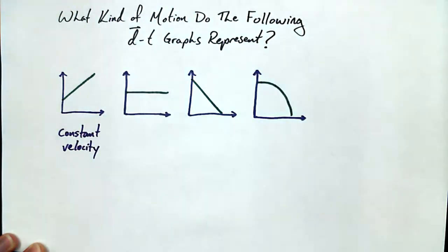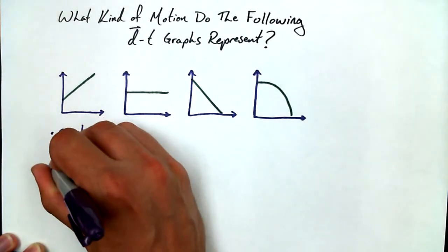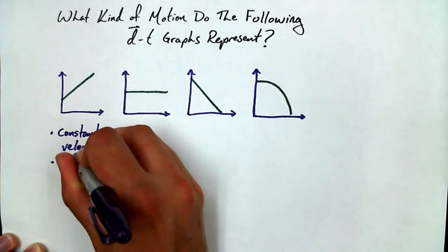Now, there is another term that people like to use. It starts with a U. Uniform. Uniform motion. So we can say this is constant velocity, uniform motion.